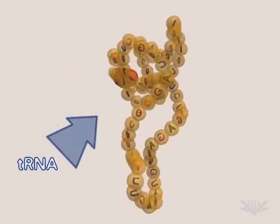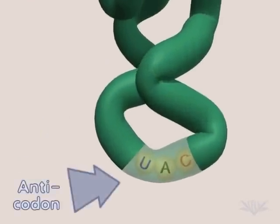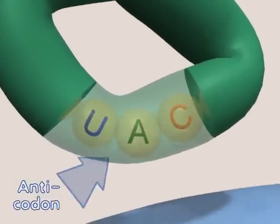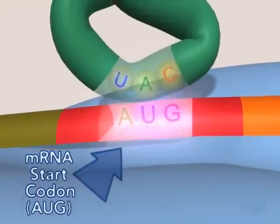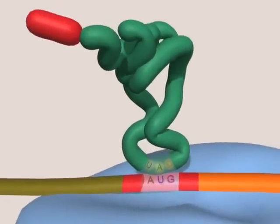tRNA is another key molecule. It contains an anticodon that is complementary to the mRNA codon to which it binds. The first mRNA codon is typically AUG.